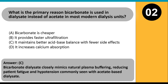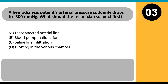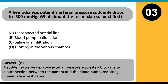Answer C. Bicarbonate dialysate closely mimics natural plasma buffering, reducing patient fatigue and hypotension commonly seen with acetate-based dialysate. A hemodialysis patient's arterial pressure suddenly drops to minus 300 millimeters of mercury. What should the technician suspect first? A. Disconnected arterial line. B. Blood pump malfunction. C. Saline line infiltration. D. Clotting in the venous chamber. Answer A. A sudden extreme negative arterial pressure suggests a blockage or disconnection between the patient and the blood pump, requiring immediate investigation.